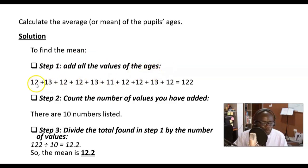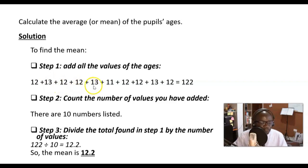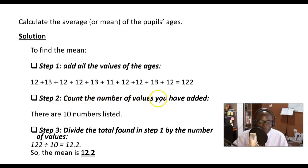The ages we have are 12, 13, 11, and so on. We need to list all of them — even if some numbers are repeating, as long as a number was stated, you add it. So we have 12 + 13 + 12 + 12 + 12 + 13 + 11 + 12 + 12 + 13 + 12. When you add all these, the total should be 122.